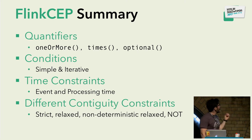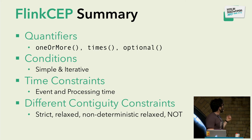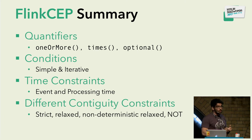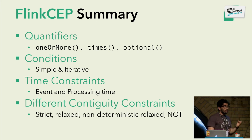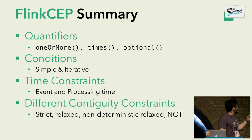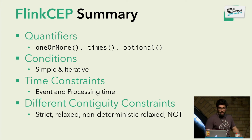In summary: a complex pattern is composed of individual patterns. For each individual pattern, Flink CEP allows you to specify quantifiers — one or more, times, and optional. You can specify simple or iterative conditions depending on whether your condition depends on previous events. You can specify time constraints in both event and processing time. And you can specify different continuity constraints: strict, relaxed, non-deterministic relaxed, and NOT patterns.